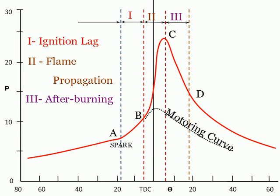Flame development or ignition lag is generally considered the consumption of the first 5–10% of the air-fuel mixture. During the ignition lag period, ignition occurs and the combustion process starts, but very little pressure rise from A to B is noticeable and little or no useful work is produced. Combustion is initiated by an electrical discharge across the electrodes of a spark plug.